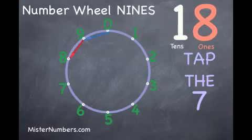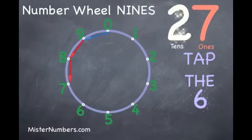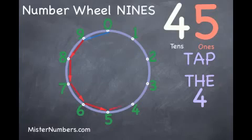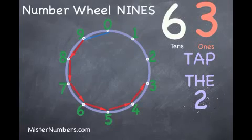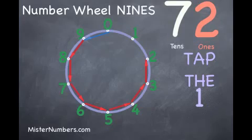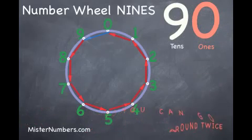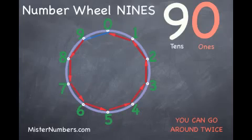Continue going around to seven, six, five, four, three, two, one, and back to zero. And you are at 90, or ten times nine.